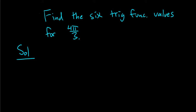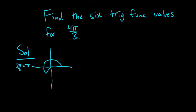To do this, you first have to find the reference angle for 4π over 3. I'll draw the y-axis and x-axis. You have to determine where 4π over 3 is. 4π over 3 is a little bit bigger than π, because you can think of π as 3π over 3. So 4π over 3 should be somewhere over here in the third quadrant.